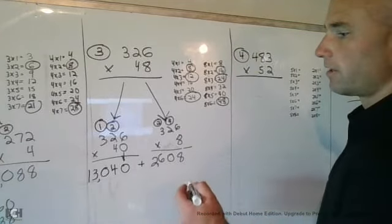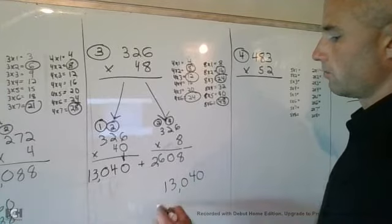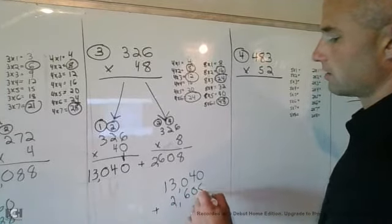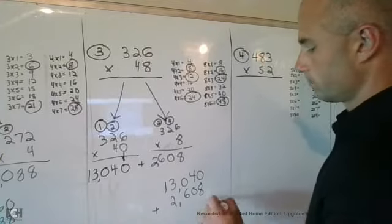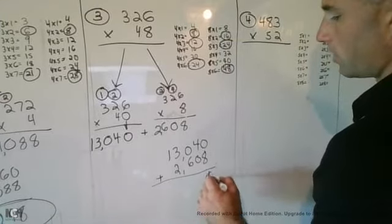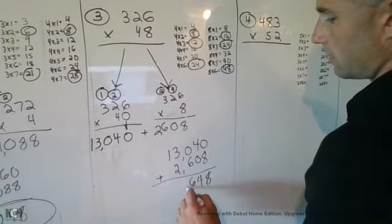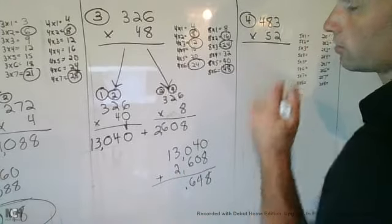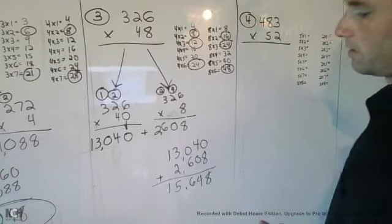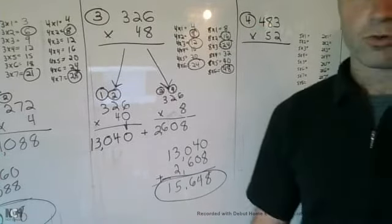And then I'll add them together: 13,040 plus 2,608. 8 in the ones place, 4 in the tens, 6 in the hundreds, 5 in the thousands, 1 in the ten thousands, giving you an answer of 15,648.